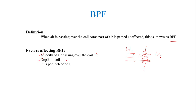The second factor is the depth of coil. In the side view of the coil, the length from one end to the other is known as the depth of coil. If the depth is less, the bypass factor will be more, because when the depth is less, the air is in contact with the coil for less time. Obviously, if you increase the depth of the coil, the bypass factor will decrease.